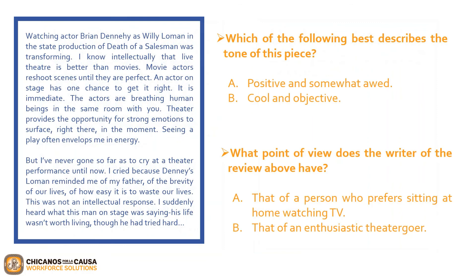That was a lot to take in. Let's try our best to answer the following two questions. Question one: which of the following best describes the tone of this piece? Given the information provided in the passage, we can conclude that the right answer is A — positive and somewhat emotional. Second question: what point of view does the writer of this review have? A, that of a person who prefers sitting at home watching TV; or B, that of an enthusiastic theater goer? The evidence shows the correct answer is B, that of an enthusiastic theater goer. The evidence is shown in the second sentence of the paragraph.